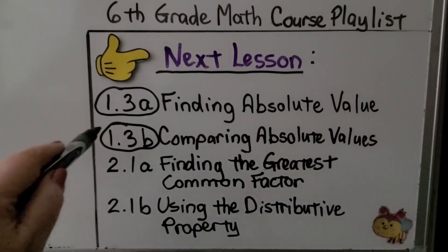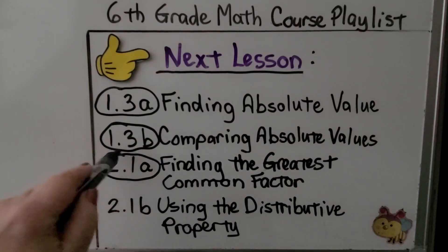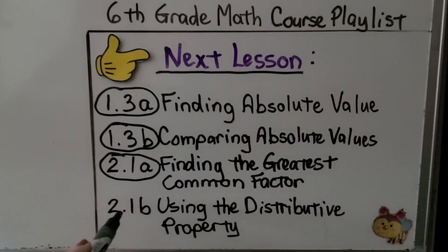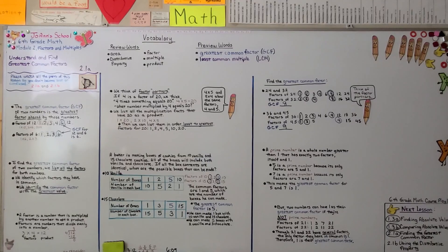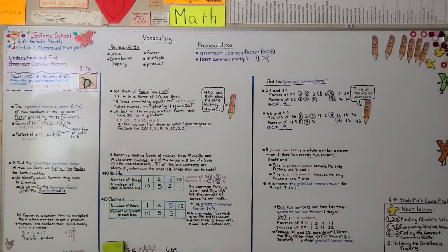We've now completed this lesson. We're going to move on to Lesson 2.1b, which covers using the distributive property. If you have your multiplication facts memorized to 12, you'll breeze through greatest common factors — and multiples when we get there. I hope you have a wonderful day. Please hit the like button to let me know if I helped you. Bye!